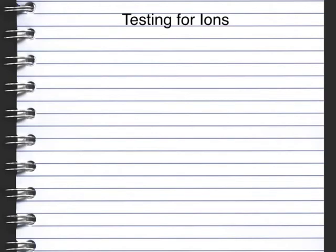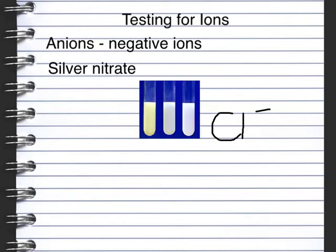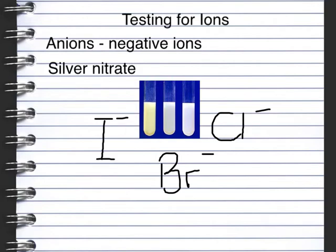We can also test ions to see whether they appear in a solution. First we look at the anions, the negative ions. We can test for the halides - group 7 - by adding silver nitrate. If a chloride ion is present it turns white, giving silver chloride. If bromide is present it goes a creamy colour, giving silver bromide. And if iodide is present it turns yellow, giving silver iodide.